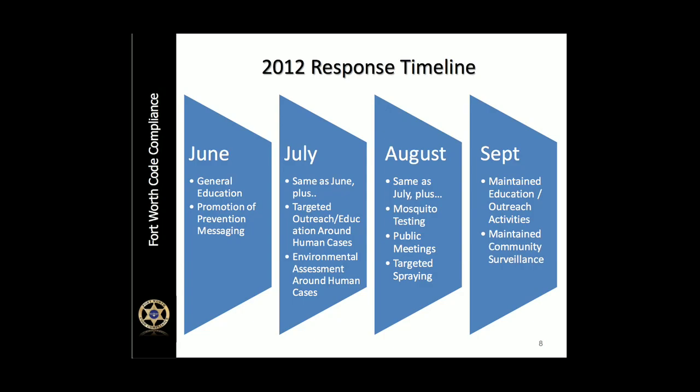We also push a program called five by five early in the summer. Most people who get bitten by Culex mosquitoes — because they are very weak flyers — were bitten by mosquitoes that hatched on the person's property or within five properties on either side of them. So the five by five is: check your property and then go talk with five neighbors on each side of you to make sure they're checking their property. That's one of the best things you can do to protect yourself and your community.